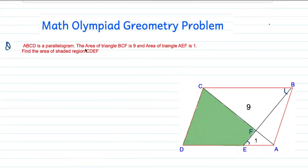Question: ABCD is a parallelogram. The area of triangle BCF is 9. The area of triangle AEF is 1. Find the area of the shaded region CDEF.